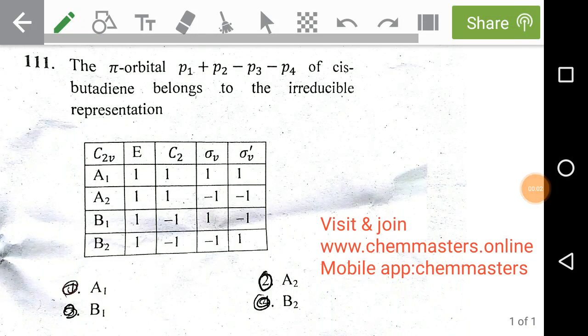Hi everyone, I hope you have done well on CSIR June 2019 chemical sciences. Here we are going to analyze each and every problem of CSIR NET June 2019 chemical sciences with accurate answers, so watch the video completely to get a good analysis and accurate answer of each and every problem. Right here we have taken character table problems of Part C.